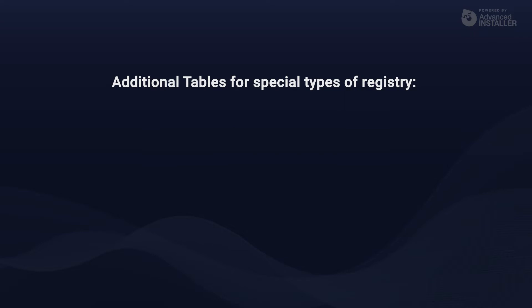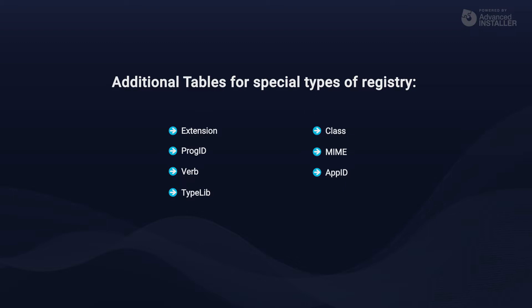The MSI database offers some additional tables for some special types of registry. These tables are: extension, progid, verb, typelib, class, mime, and appid. These are considered tables for COMs and extensions. The registry table we looked at in the last video contains the rest of the registry that cannot be included in these tables.